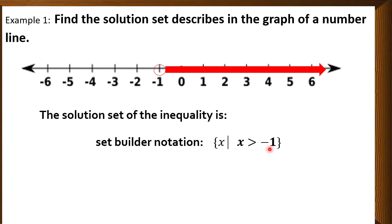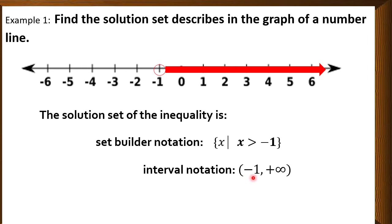Now if we're going to write this in interval notation, we have negative 1. The symbol we're going to use before negative 1 is an open parenthesis, meaning negative 1 is not part of the solution because we have an open circle. So open parenthesis, negative 1, then comma, then the shaded region goes to positive infinity. The symbol for infinity uses parenthesis because we do not know the exact number where it ends — infinity does not specify a certain number, it is just a representation. So we use a close parenthesis for infinity. This is now the interval notation.